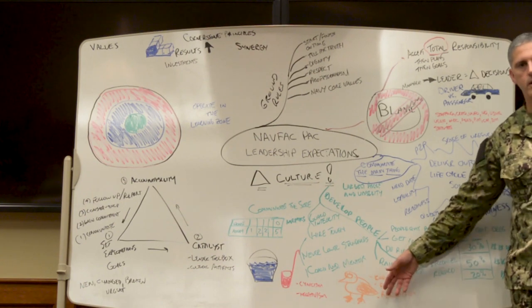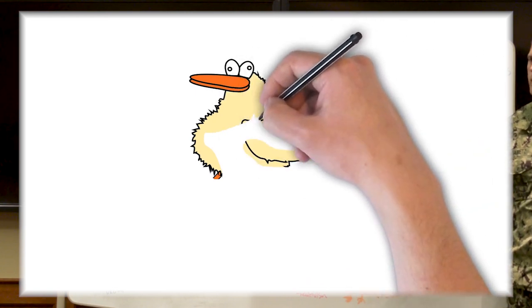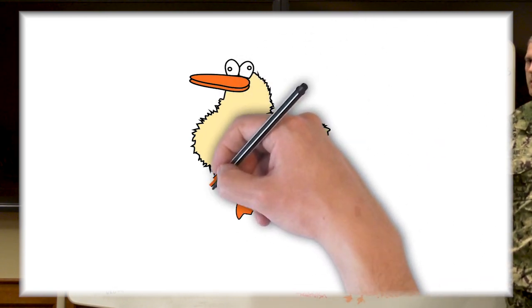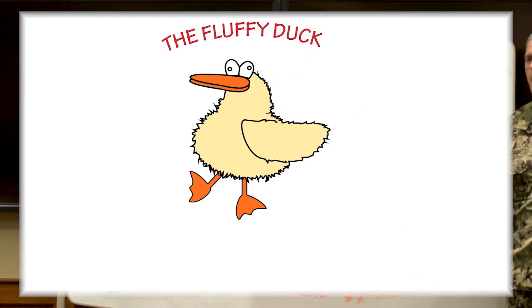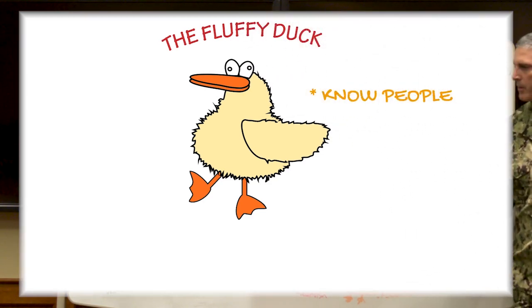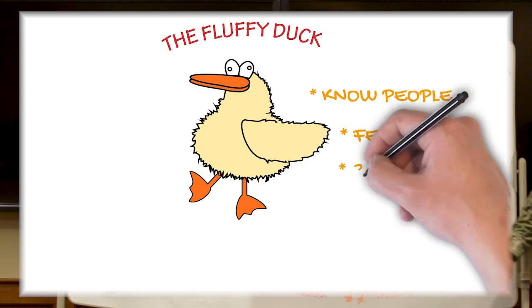This right here, this orange thing you can barely see, is a fluffy duck. And why is that important? Well, it's something about some individual on your team that you know. When you talk to them, you know them as people and value them as people, not just employees where you're trying to get something done.